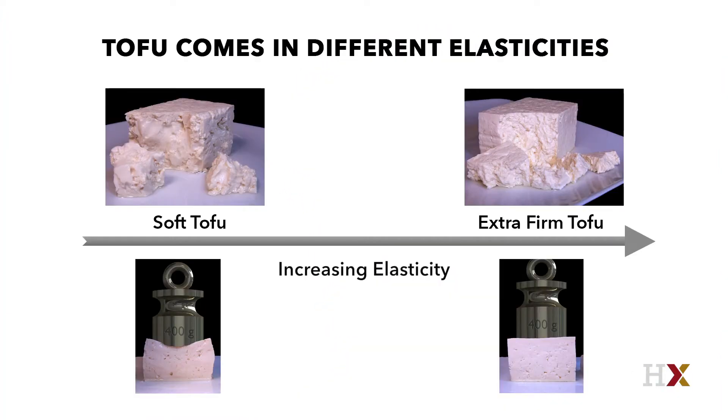So all foods have a texture. All foods have a mouthfeel. If you don't like steak, for example — if you prefer tofu, if you're a vegetarian — it too comes in different flavors and different styles. You can get a firm tofu or you can get a soft tofu. A firm tofu takes more force from your mouth to chew it. It's more elastic. It's stiffer.